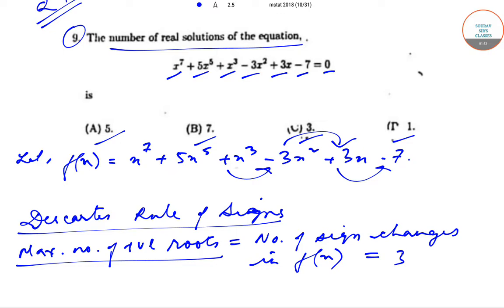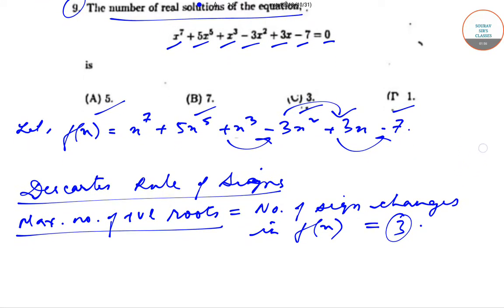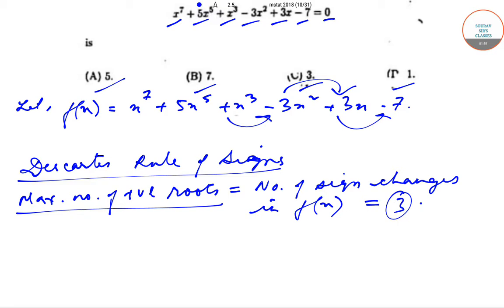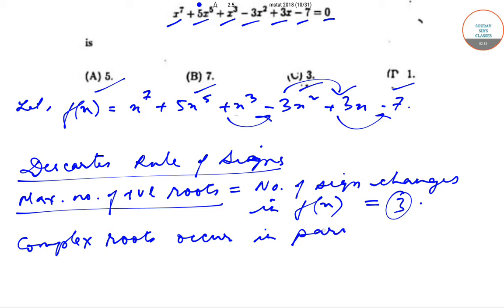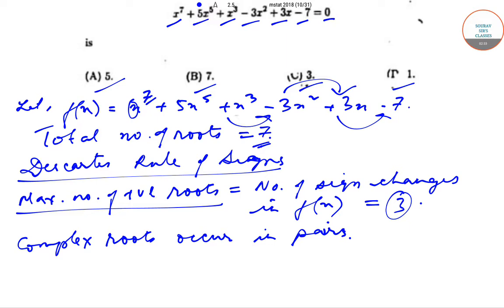So the maximum number of positive roots possible is three. We also know that complex roots occur in pairs. The highest power of x is 7, so the total number of roots is equal to 7.